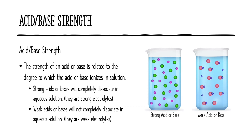When we talk about acid and base strength, the strength of the acid or base is related to the degree to which the acid or base will ionize in solution. Stronger acids or bases will completely dissociate in aqueous solution, meaning they come completely apart to form ions. Looking at the first beaker, the substance has completely dissociated into independently floating ions. Weak acids or bases will not completely dissociate — these are weak electrolytes that only partially dissociate. In the second beaker, there are a few ions but mostly particles still intact, still stuck together.